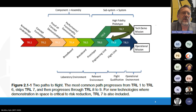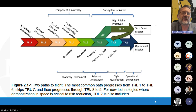This shows TRL 1 through 9, but I like this version much better because it explains why 7 is different. TRL 7 is not really in the path between 6 and 8 — it's its own thing. It's a demonstration in space of TRL 6. So you don't go 6, 7, 8. If you're on the ground you go from 6 to 8, and if you need to do a demo in space you go from 6 to 7.